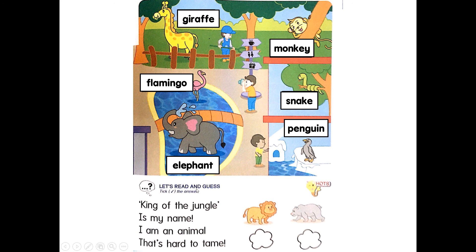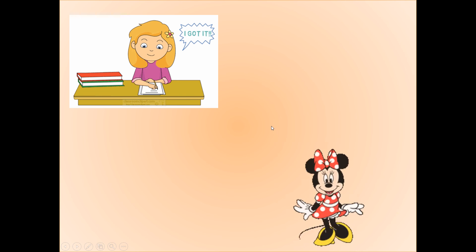Let's read and guess. King of the jungle is my name. I am an animal that's hard to tame. Who am I? I am a lion. That's all for today. Remember, do your homework and bye-bye.